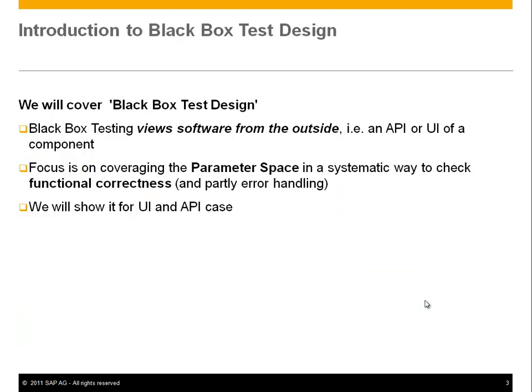Now we'll cover black box test design. Some important points: black box test design views the software from the outside. We look at an API or a UI of a component and we see what is offered there — fields, actions, and so forth. The focus here is on covering the parameter space in a systematic way, meaning what can I put in, then I trigger some action and I see if the program behaves correctly.